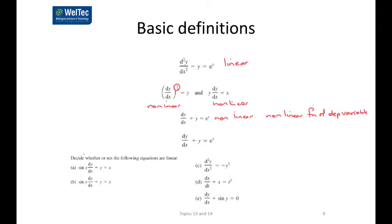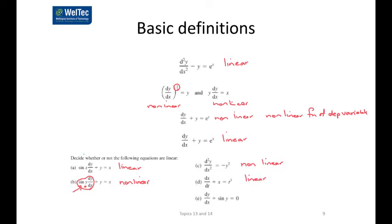The next example is nonlinear because it's e to the y, whereas e to the x would be linear. Looking at the set of examples A through E: A is linear; B is nonlinear because it has a product of y and its derivative, and the sine of y is also nonlinear; C is nonlinear because it has a nonlinear second derivative; D is linear; and E is nonlinear because it has the sine of the dependent variable.